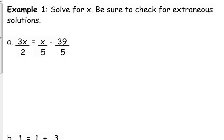Here's our first example. 3x over 2 is equal to x over 5 minus 39 over 5.